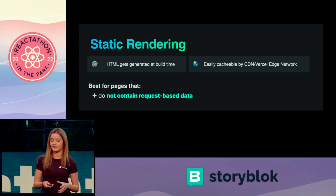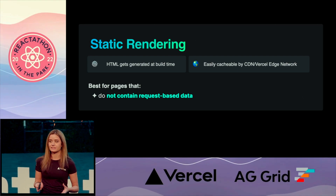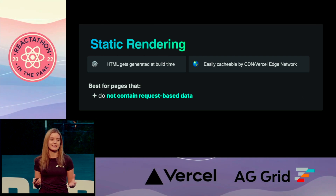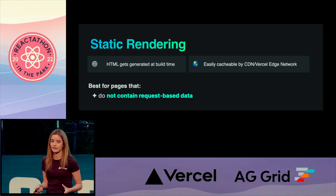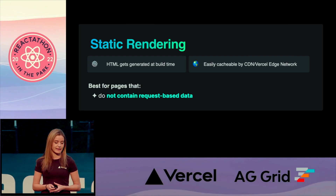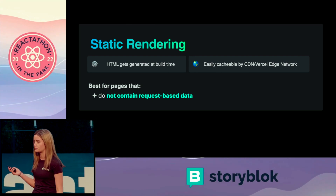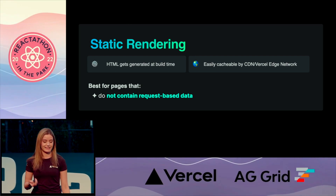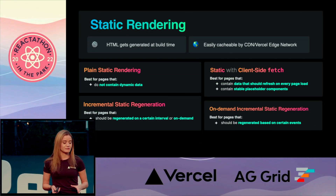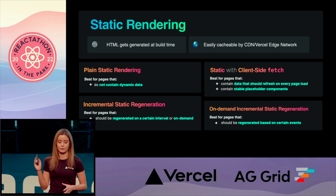First, let's talk about a pattern that may seem very basic and straightforward, namely static rendering. Static rendering is a very performant pattern because it comes with so many performance benefits. With static rendering, the entire HTML gets generated at build time. These static assets are easily cacheable by a CDN or on Vercel by the Edge network, making it possible to get extremely fast responses because we can just return the cached data from the CDN instead of going all the way to the origin server. Although it might seem simple, there are many variations to static rendering to serve a lot of different use cases.